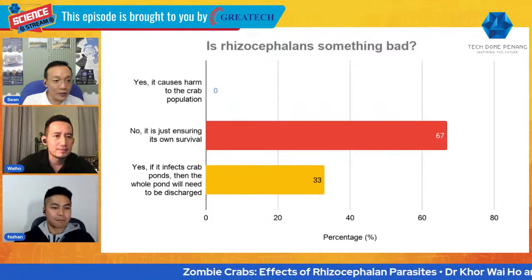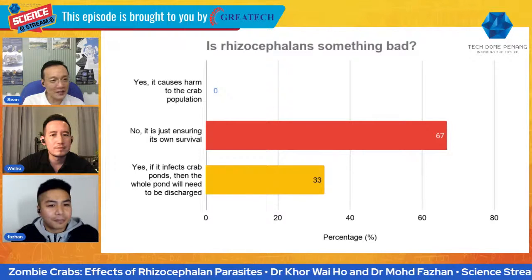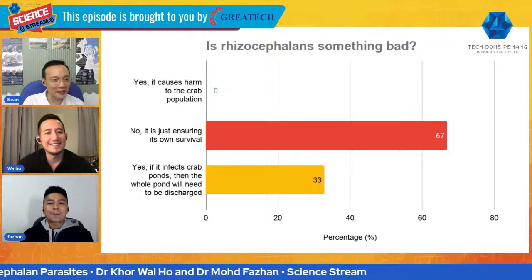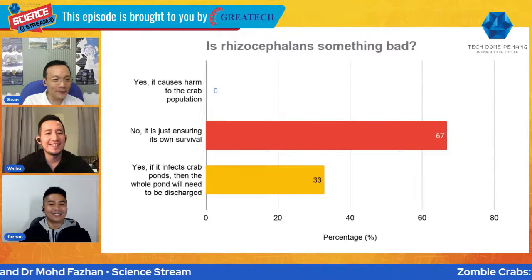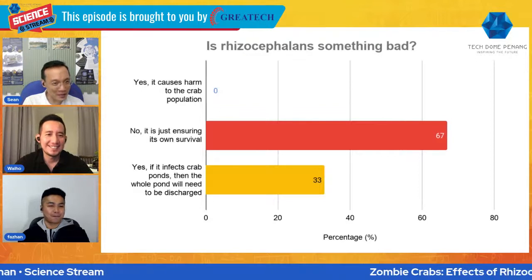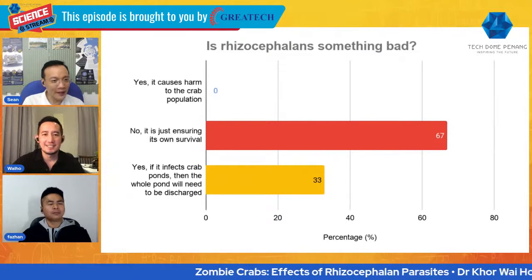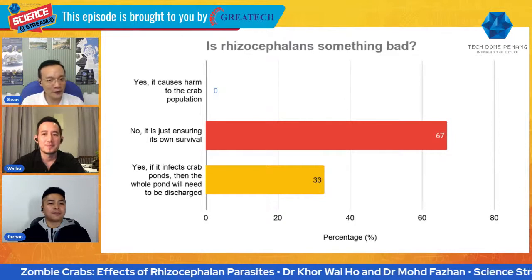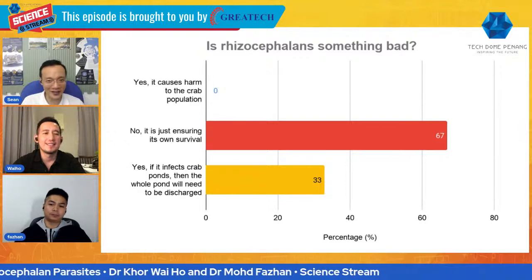Let's see how the audience responded to the poll. It seems a lot of people don't blame the parasite. But there is some concern that it infects crab ponds, resulting in a huge loss, so maybe there are some farmers in the audience.